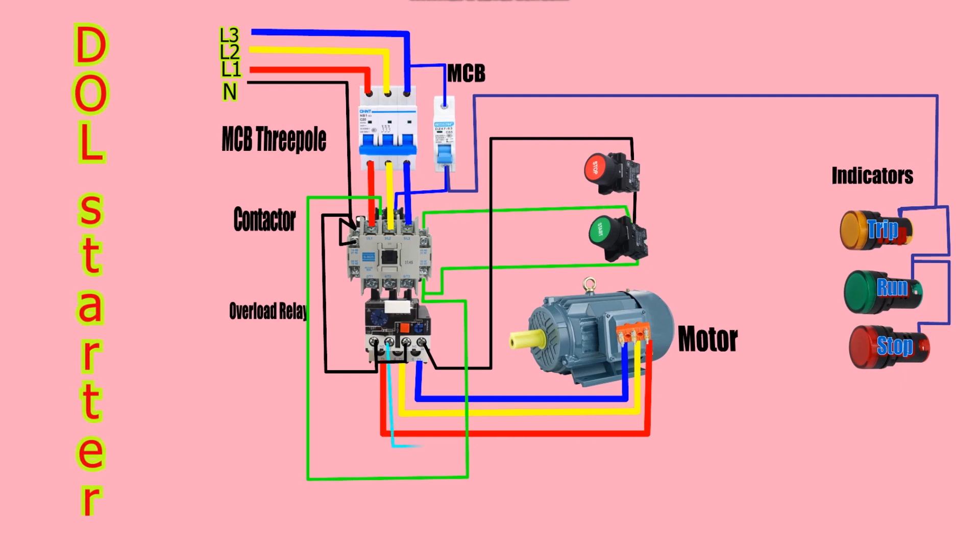As shown in the video, a light blue wire is taken from the normally open auxiliary contact of the contactor and connected to the trip indicator lamp. This light will illuminate if the overload relay trips.